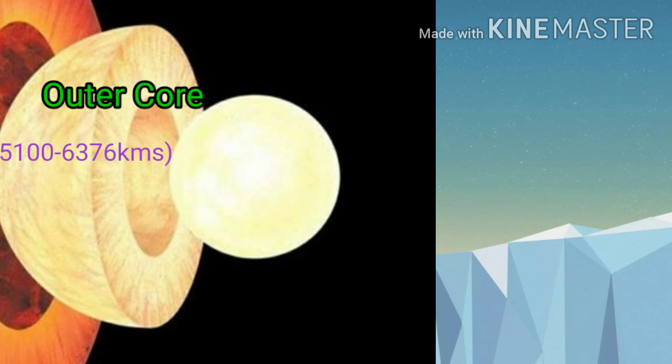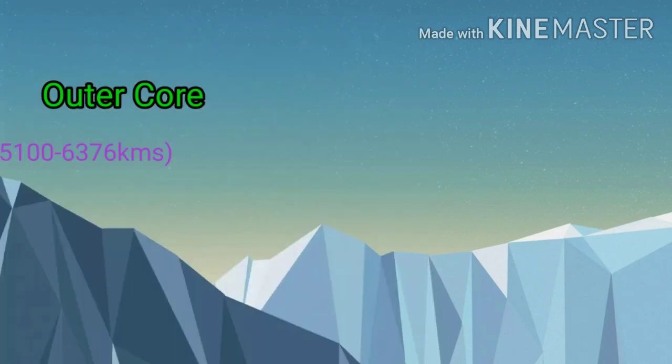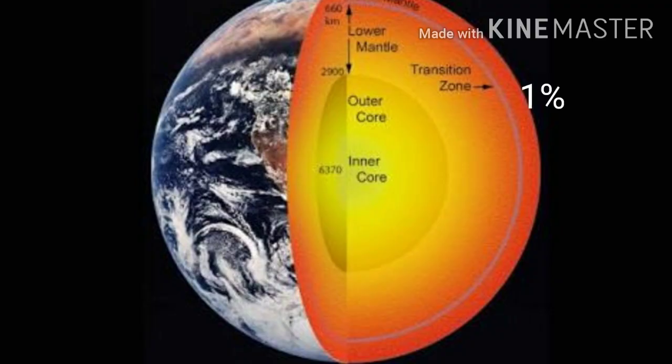Earth crust forms one percent of the volume of the earth. The mantle is 16% of the volume of the earth, and the core is 83% of the volume of the earth.